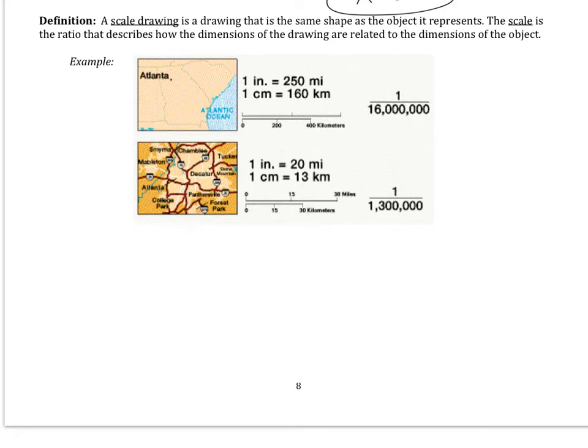You're going to notice we have two examples of scale drawings, and these would be maps. So maps represent the real-life region that you're looking at. The scale would be right here. So this is telling me 1 inch on the map represents 250 miles in real life. The second map, 1 inch on the map, is 20 miles in real life. So if I measure, and I find that the distance between two cities is 3 inches on the second map, that tells me that those two cities are about 60 miles apart, 3 times 20.